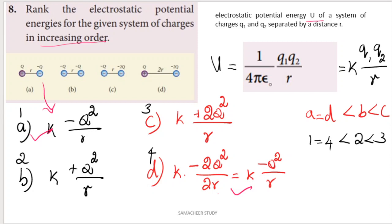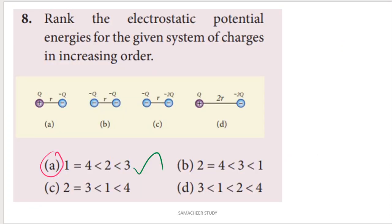At minus Q squared, the highest energy is plus Q squared. Option B is next. In increasing order, the lowest potential energy to the highest: 1 equal to 4, which is lesser than 2 and 3. The answer for question number 8 is option A.